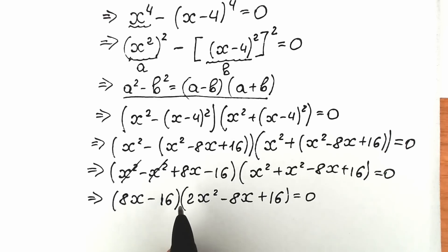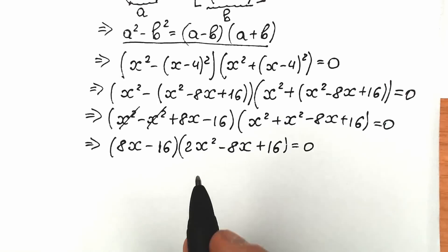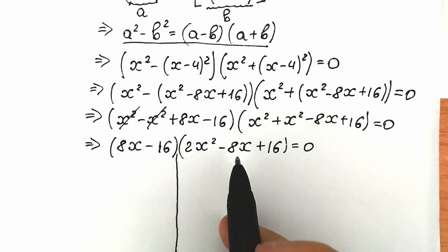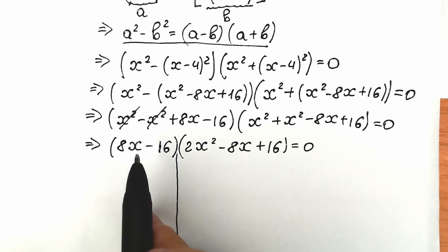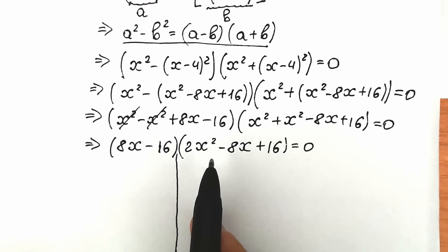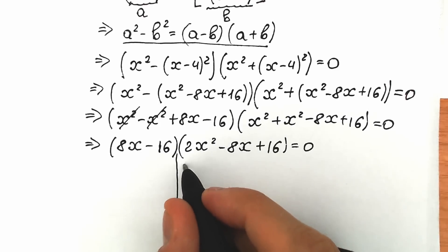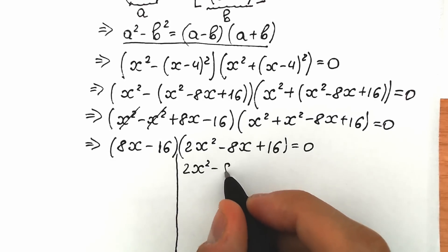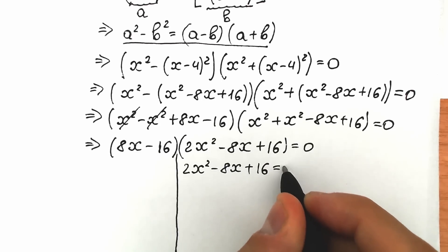As a result we have a product of two parentheses. The product of two parentheses equals zero when the first parenthesis equals zero or the second parenthesis equals zero. Let's start with the second parenthesis. We have the equation 2x squared minus 8x plus 16 equals zero.